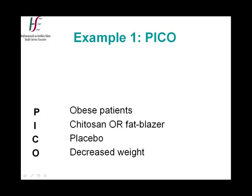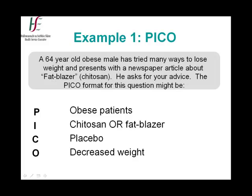We will now look at an example of using the PICO method. In this first example, the patient or population is obese patients. The intervention being examined is fat blazer, or using its clinical name, kytosan. There is no direct comparable intervention, so placebo is used. Indeed, in many formulated PICOs, there will not be a direct comparison. The outcome is whether this intervention led to decreased weight.